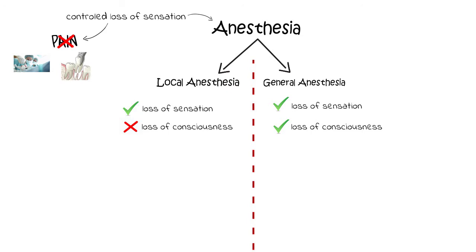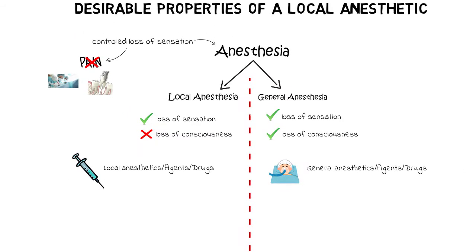The agents that produce the effect of local anesthesia are known as local anesthetics, while those that produce the effect of general anesthesia are known as general anesthetics. But in this video, we will be discussing the desirable qualities of an ideal local anesthetic agent.